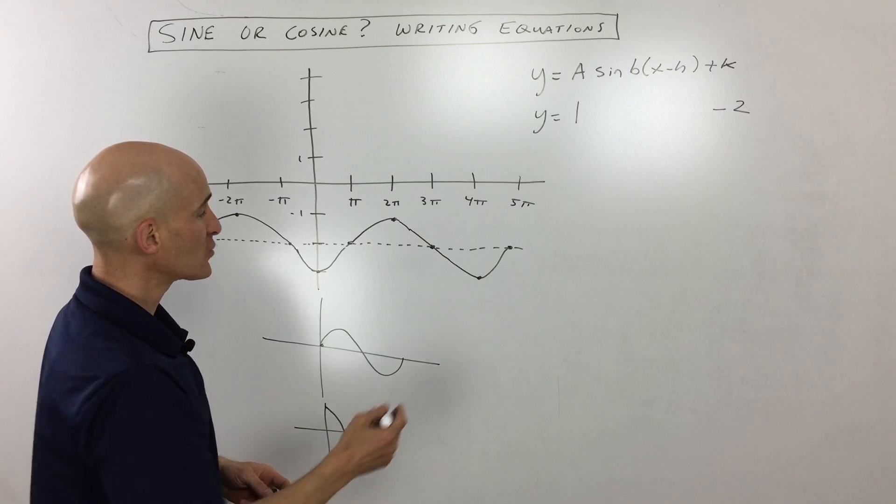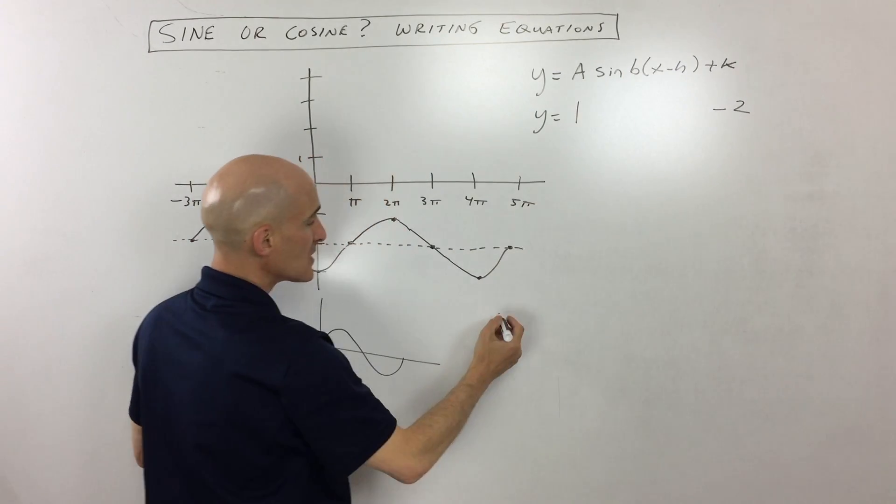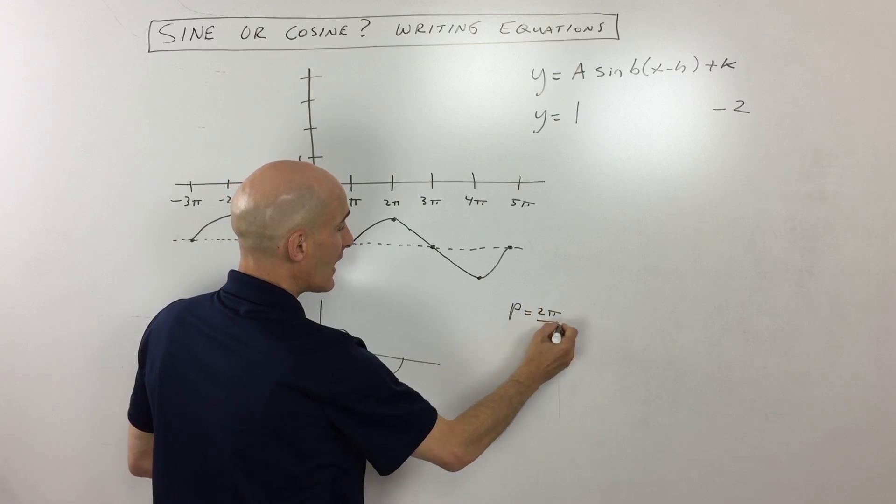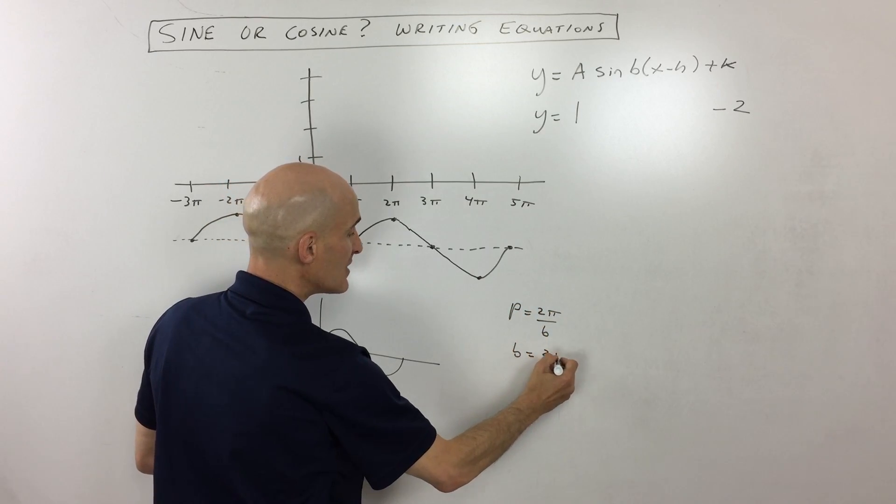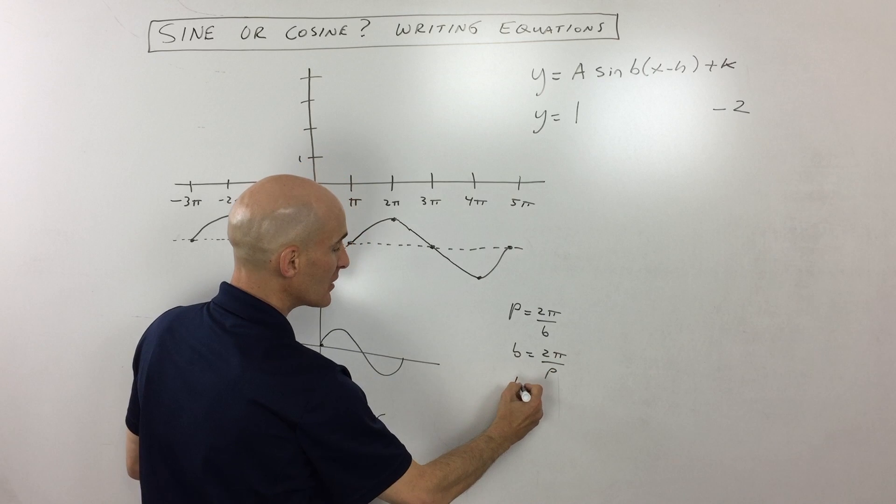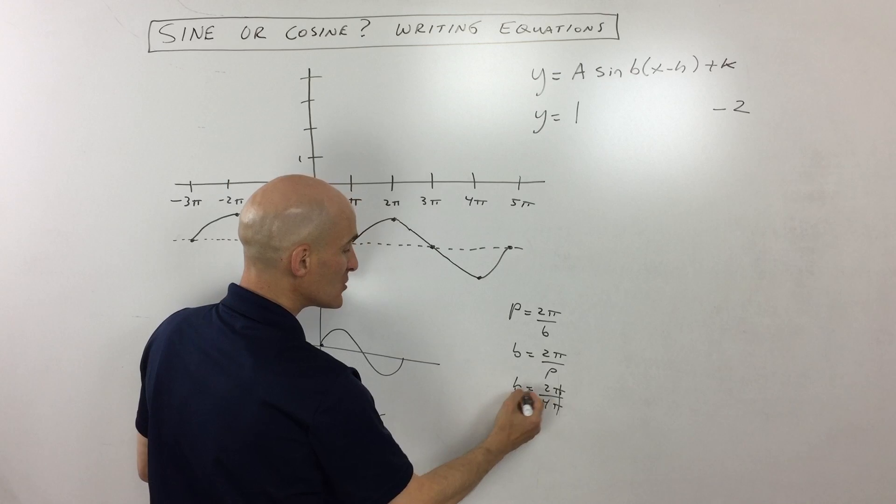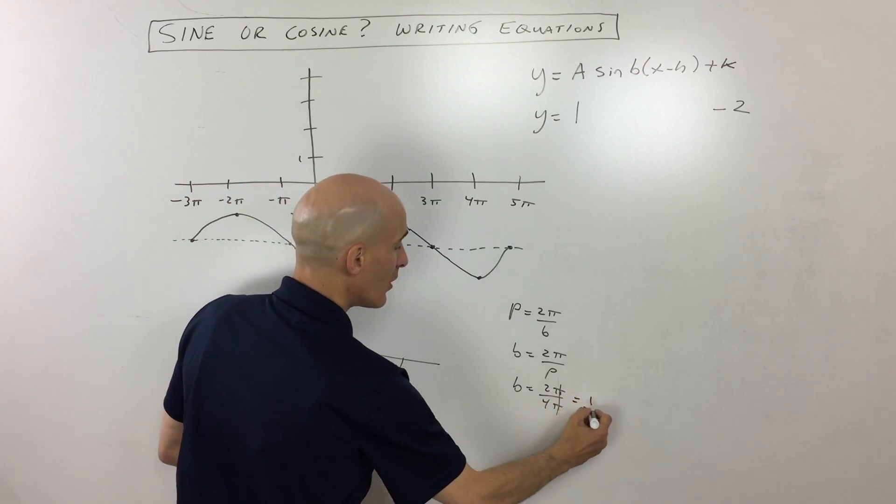So in this case, let's go ahead and calculate what this b value is. And the formula for this is the period is equal to two pi divided by b. In this case, the period is four pi. So if we reduce, you can see that b is equal to one half.